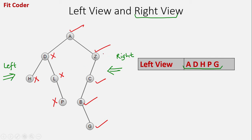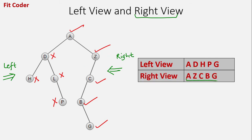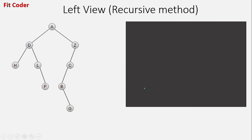So the nodes in the right view are A, Z, C, B, and G. We have to write an algorithm by which we can find the left view and the right view of any binary tree. The left view can be found both by recursive method and by iterative method. In this video, we will focus on the recursive approach. Let's see the pseudocode.